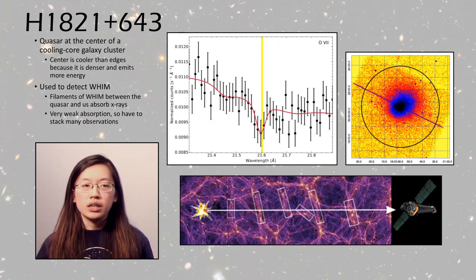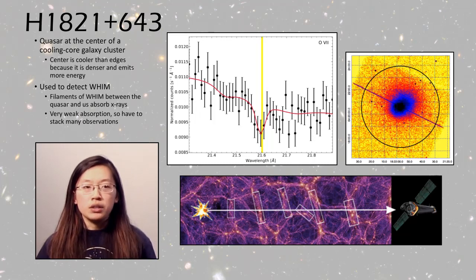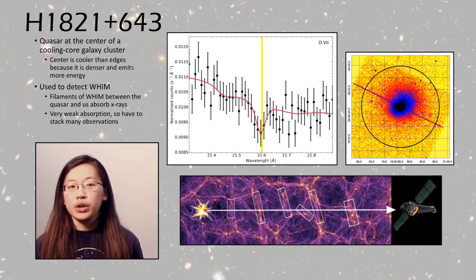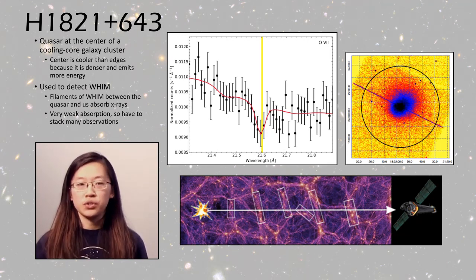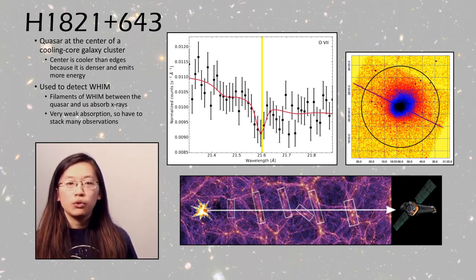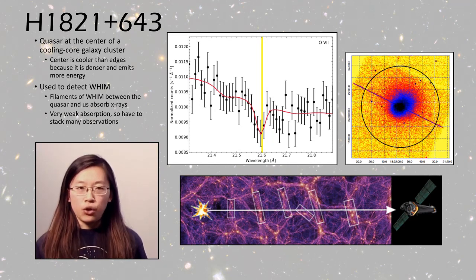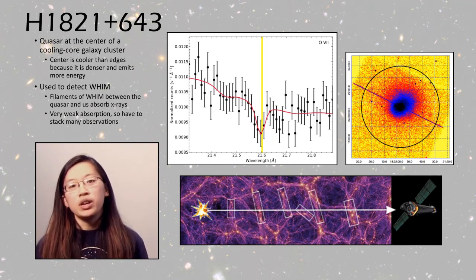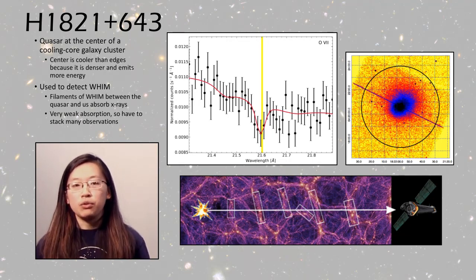Similarly, our next DSO, H1821+643, is a quasar at the center of a cooling core cluster — so named because the center of the cluster is cooler than its edges, as the way it radiates energy is proportional to its density, and the center is the densest part. This one is also used to detect WHIM, because WHIM between the quasar and us will absorb X-rays. However, this is very weak absorption, so to make this detection they had to stack a lot of Chandra observations.